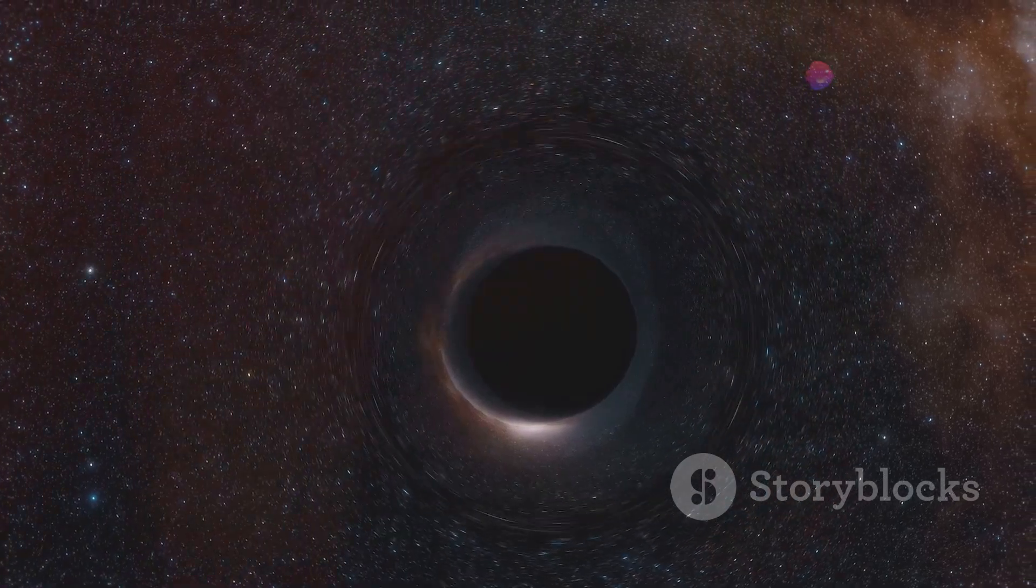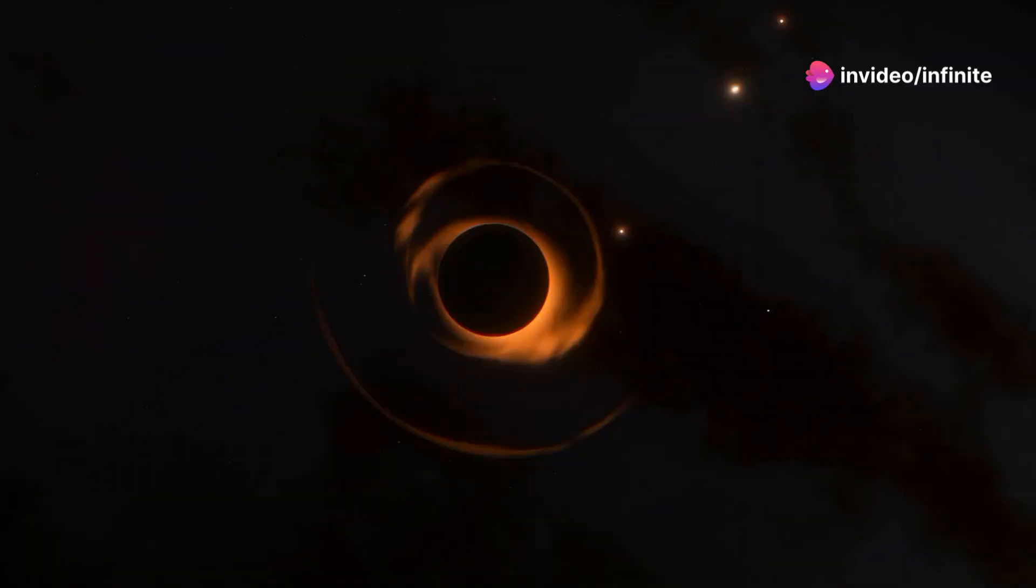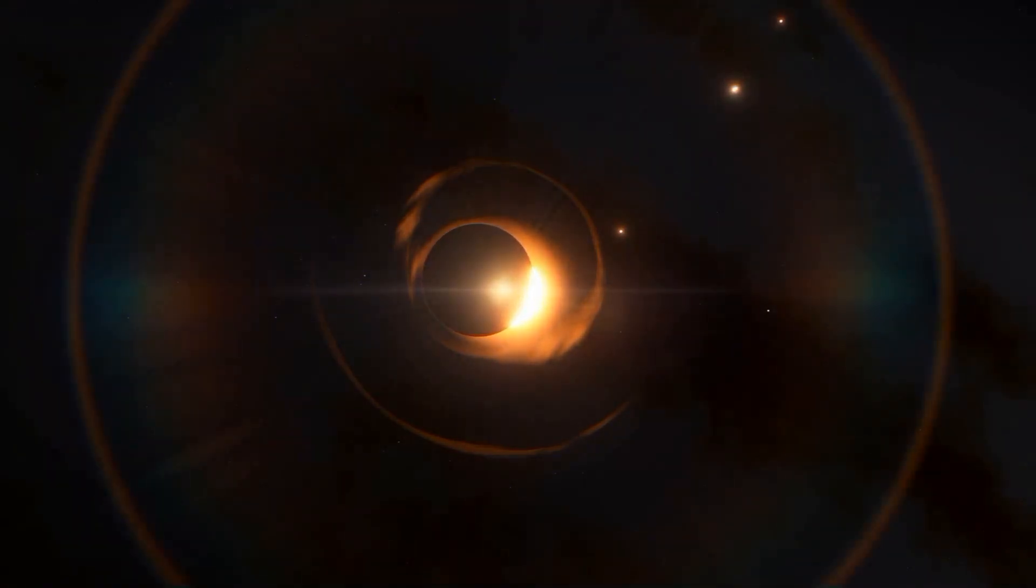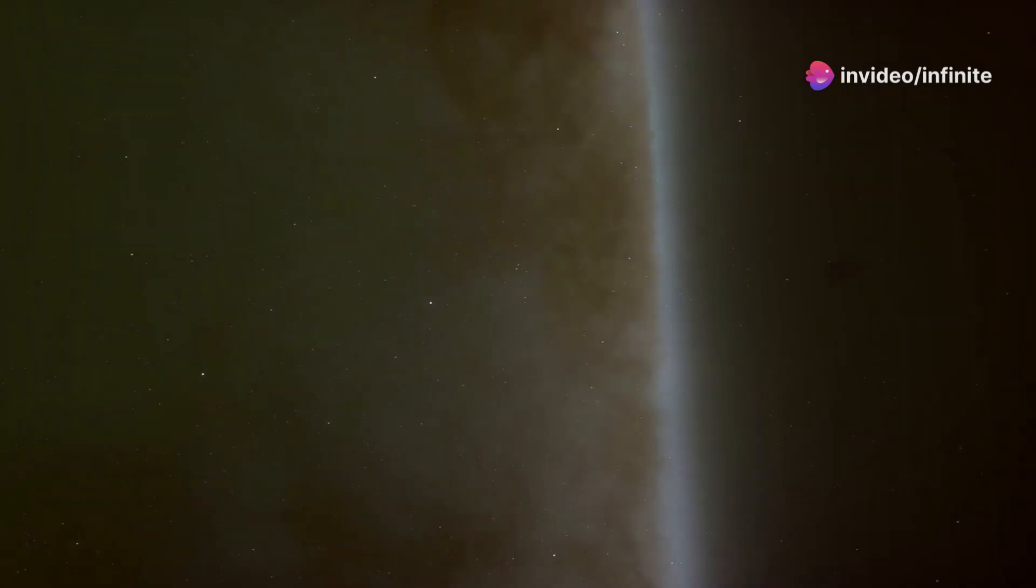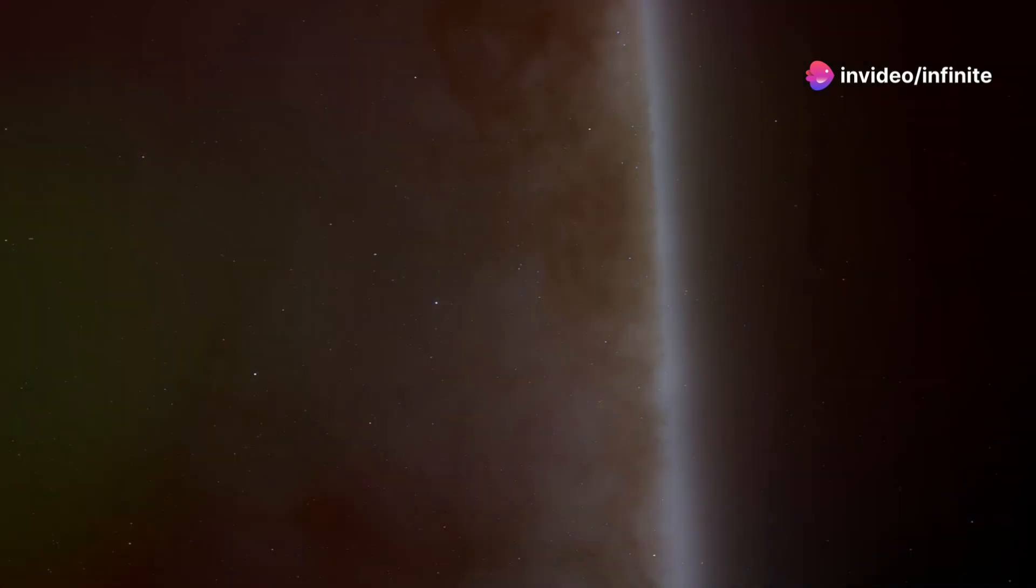Surrounding the singularity is the event horizon, the point of no return. This boundary marks the limits of the black hole's influence. Once something crosses the event horizon, it's gone forever, trapped by the black hole's immense gravity. This includes stars, planets, and even light itself. The mysteries of what lies beyond the event horizon continue to captivate and challenge our understanding of the universe.